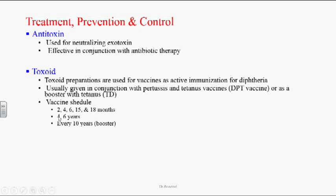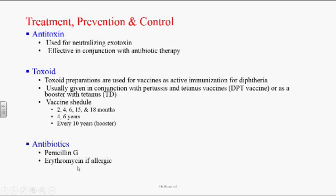The vaccine schedule: doses starting from 2nd month, 4th month, 6th month, 15th–18th months, then at 4 years and 6 years, and a booster every 10 years thereafter. Antibiotics: penicillin G is the drug of choice. If patients are sensitive to penicillin, erythromycin is an alternative.